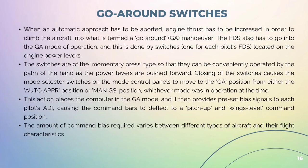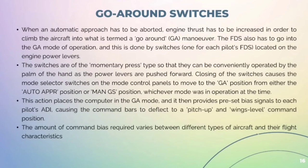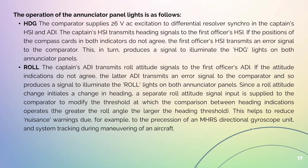Go Around Switches: When an automatic approach has to be aborted, engine thrust has to be increased in order to climb the aircraft into what is termed a go-around maneuver. The FDS also has to go into the GA mode of operation, and this is done by switches — one for each pilot's FDS — located on the engine power levers. The switches are of the momentary press type so that they can be conveniently operated by the palm of the hand as the power levers are pushed forward. Closing of the switches causes the mode selector switches on the mode control panels to move to the GA position from either the AUTO APPR or MAN/GS position, whichever mode was in operation at the time. This places the computer in the GA mode, providing preset bias signals to each pilot's ADI, causing the command bars to deflect to a pitch-up and wings-level command position.